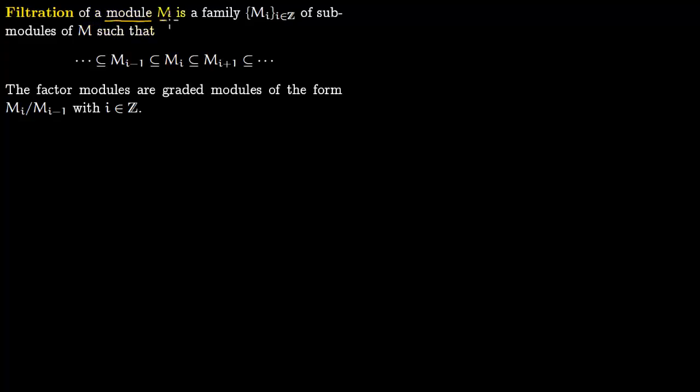Filtration of a module M is a family of submodules of M such that there's a chain like this: M_{i-1} is contained in M_i which is contained in M_{i+1} and so on.